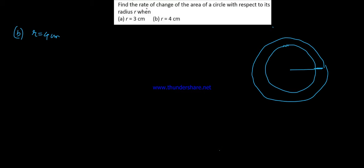To find the rate of change of area of the circle with respect to radius — if you see the radius of the area, you can see how fast the radius of the area is.